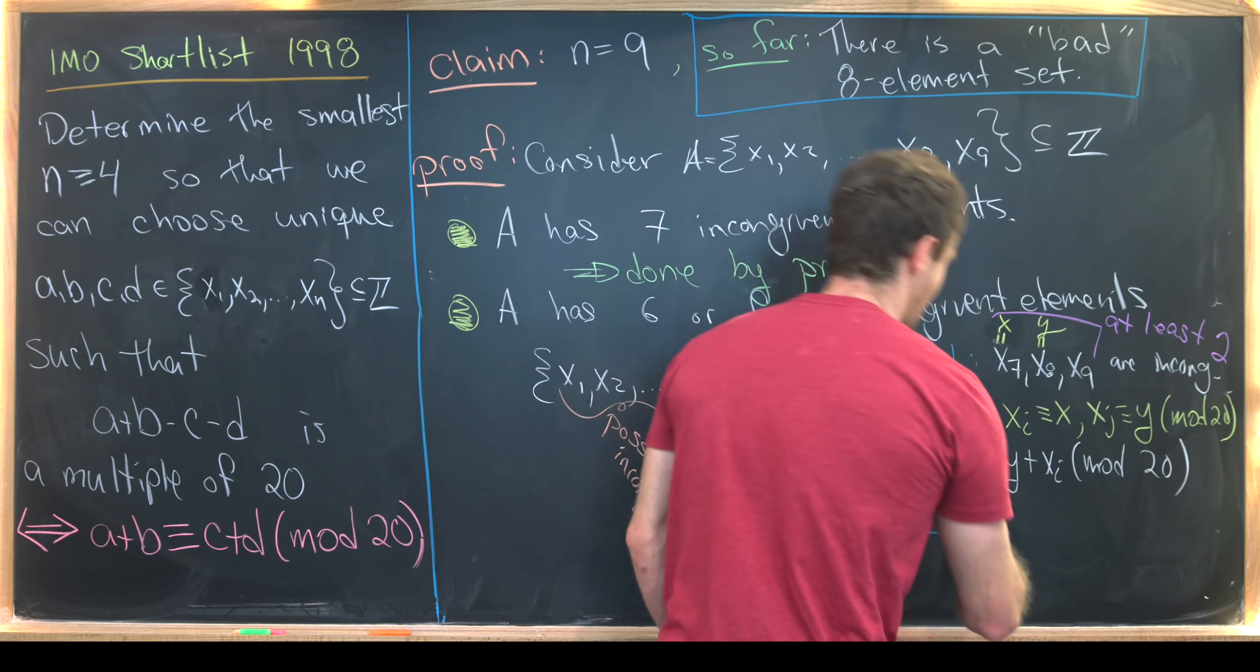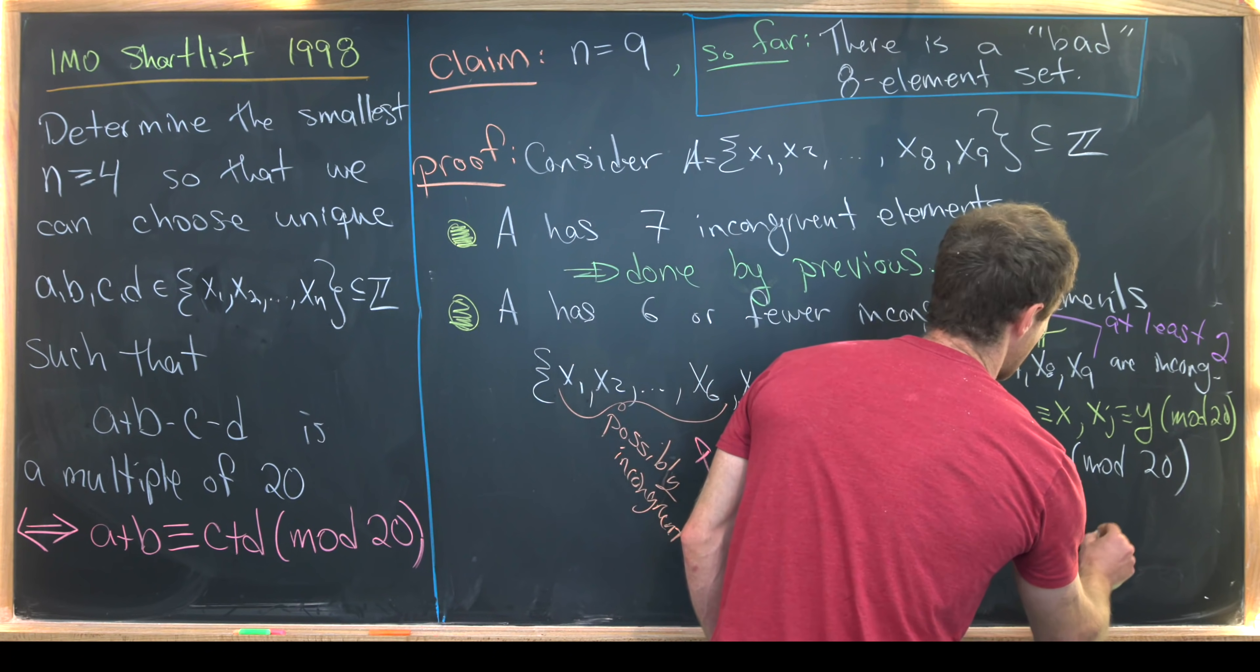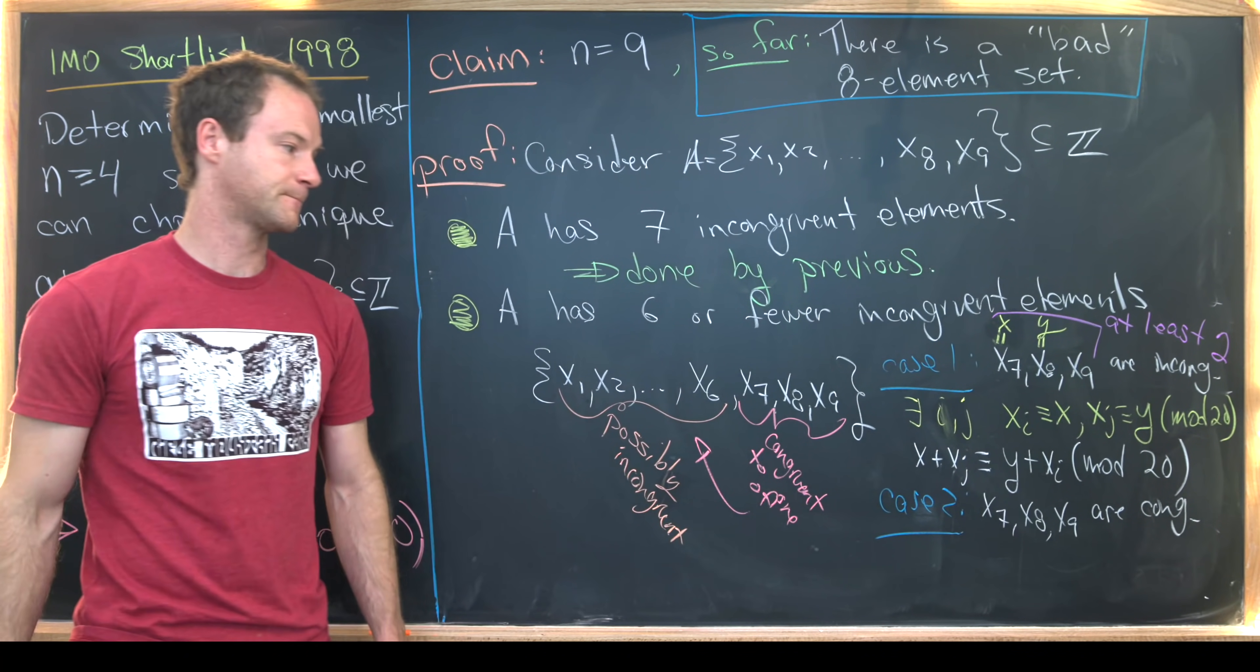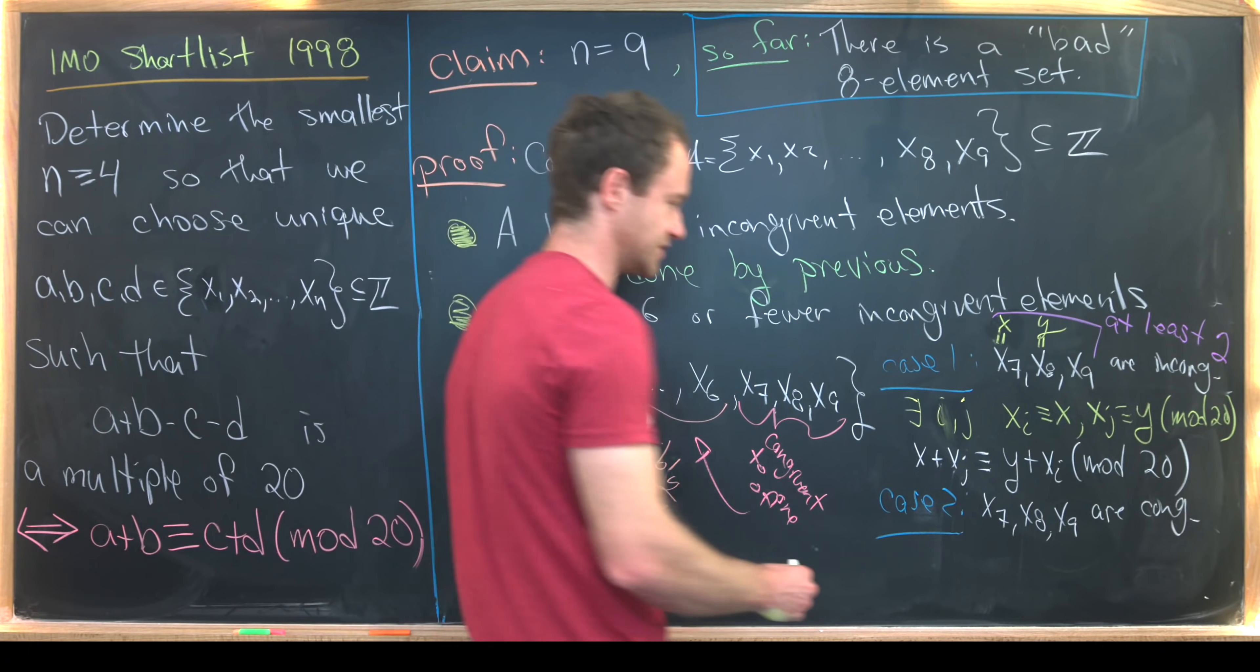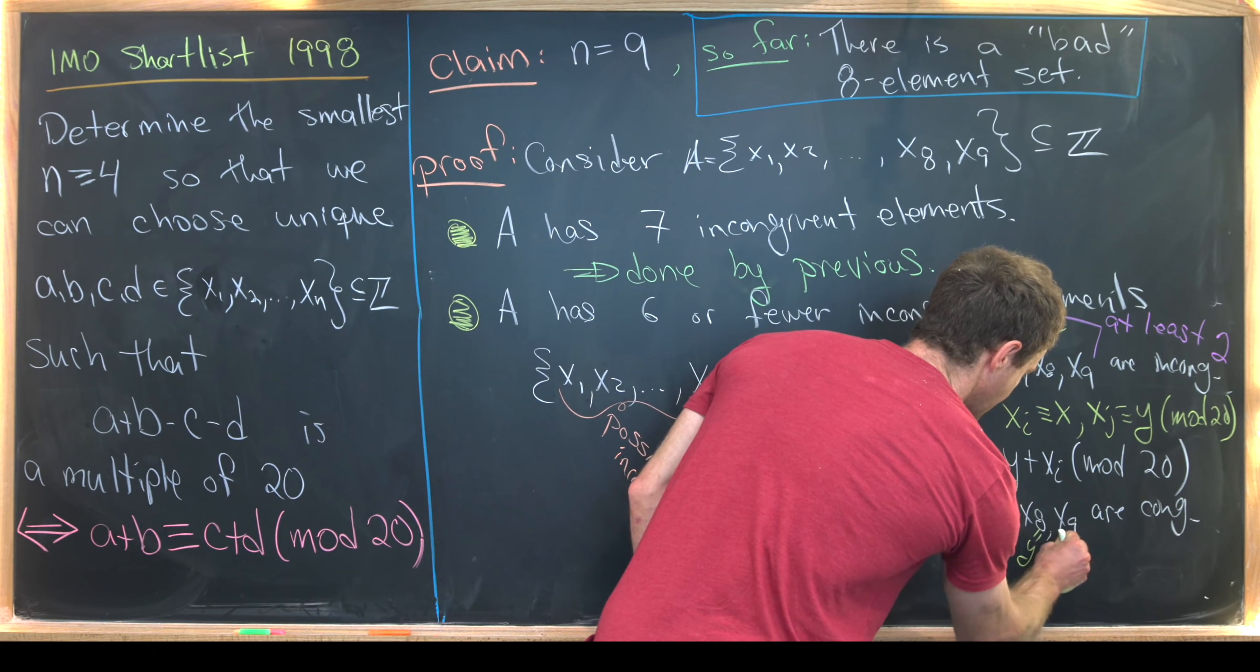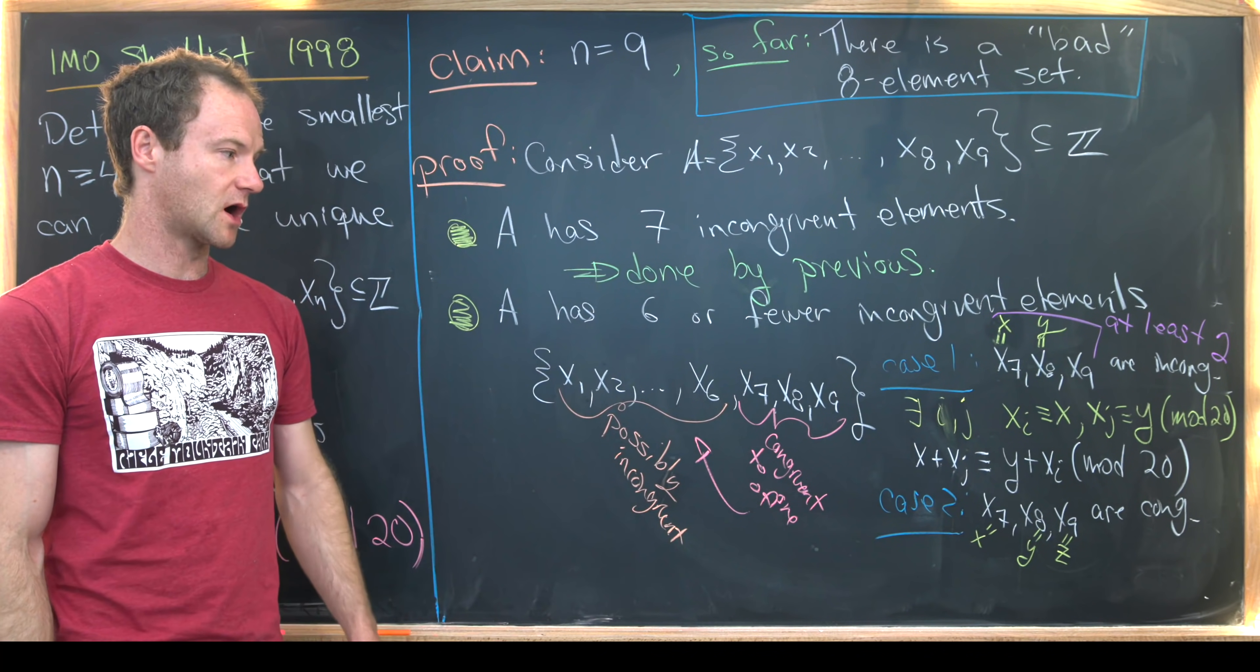And that is x7, x8, and x9 are all congruent mod 20. Let's introduce a notation just like we did before. We'll call this one x, we'll call this one y, and we'll call this one z. Well, those are all congruent mod 20.